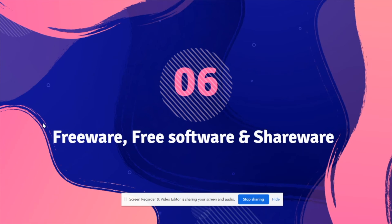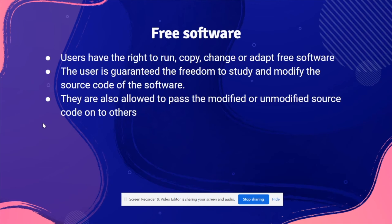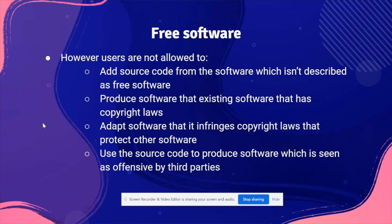Free software is a type of software license where users have the right to run, copy, or adapt the software. The user is guaranteed the freedom to study and modify the source code, and is also allowed to pass the modified or unmodified source code on to others. However, users are not allowed to add source code from software that isn't described as free software, since some software may be protected by copyright laws.